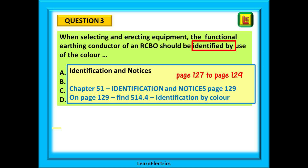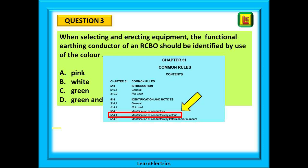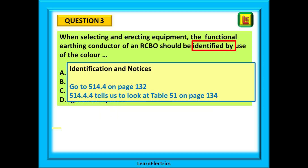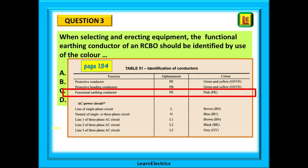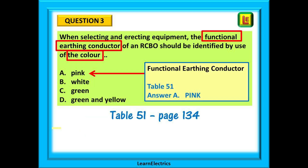On page 129 is another contents page just for chapter 51, with more detail. About halfway down we find regulation 514.4, identification of conductors by colour. Going to regulation 514.4 on page 132, we scan down to find 514.4.4, which tells us to look at table 51 on page 134. On page 134, table 51, identification of conductors — look for 'functional earthing conductor' near the top, and there is the colour pink. This used to be white, but now it's pink, and highly likely to come up as an exam question. So our answer is A, the colour pink.